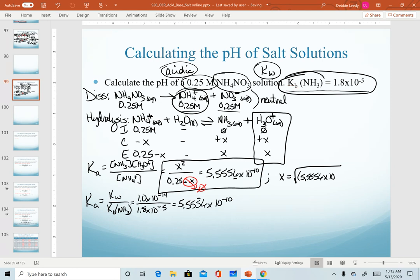Our setup for x is going to be the square root of the product of our Ka value that we've just calculated times our initial concentration. In equation form, we are taking the square root of our Ka times our initial concentration, the product of those.